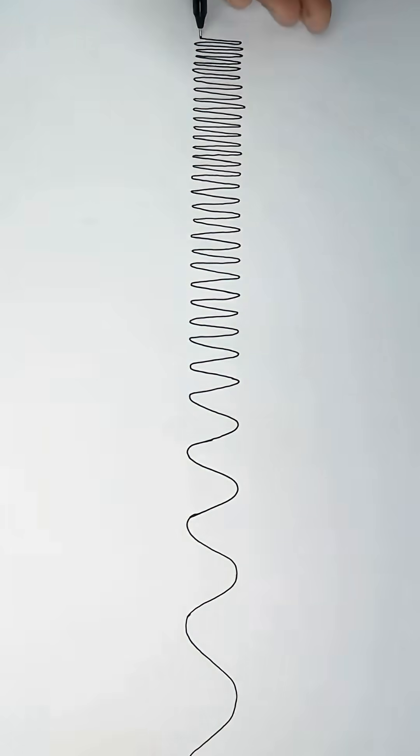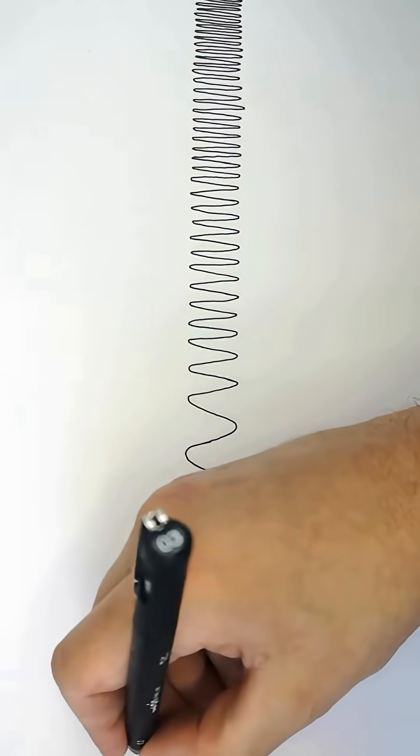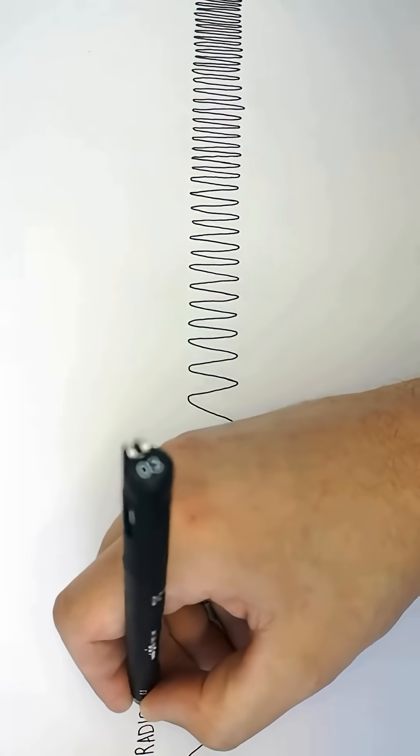This here is the electromagnetic spectrum that I'm drawing. This part of the electromagnetic spectrum is where you find the longest wavelengths. This is where you find the radio waves.